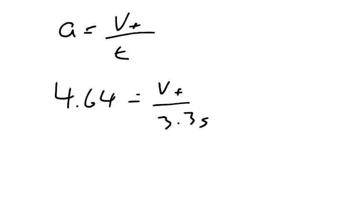Then I can solve for my final velocity, and I'm going to solve for my final velocity so I can calculate the average velocity so I can calculate the average velocity and get the distance. So, 4.64 times 3.3 equals 15.3 meters per second. So is our final velocity.